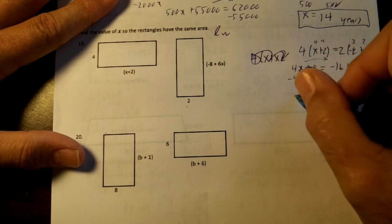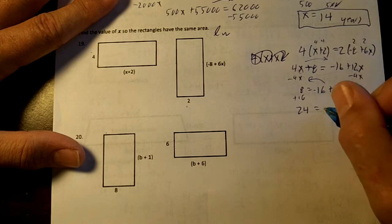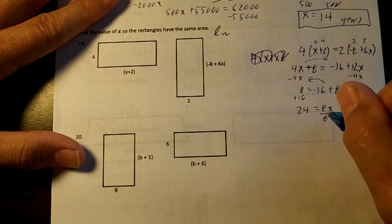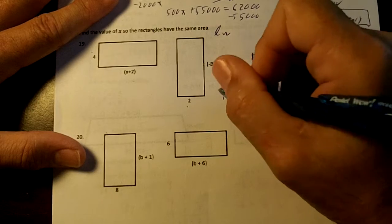Move the 16 over. So 24 equals 8x. Divide by 8. So x is going to end up being 3.